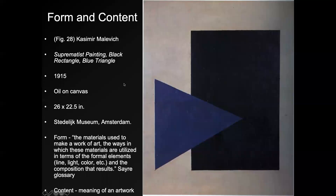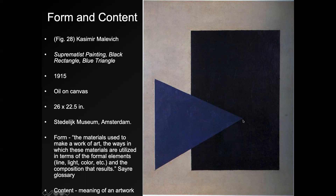Malevich called all his pictures 'Suprematist.' His 'Black Rectangle and Blue Triangle' is pretty much truth in advertising — we do see exactly that. Form is defined as the materials used to make a work of art, the ways those materials are utilized in terms of formal elements like line, light, and color, and the composition that results. This picture is almost pure form. Malevich did intend a content, but it wouldn't be immediately clear to most people.